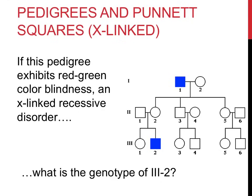The final set of questions involves X-linked recessive traits. The scenario reads: if this pedigree exhibits red-green colorblindness, an X-linked recessive disorder, what would the genotype of Roman numeral 3-2 be? For X-linked problems, it's important to note that the sex of the individual in question matters. Roman numeral 3-2 is a male with this particular disorder. Males only have one X chromosome and a Y. As a result, Roman numeral 3-2 would have the genotype X lowercase b, Y — since he shows this recessive disorder.